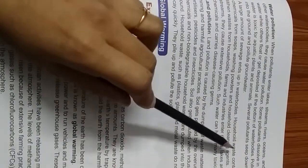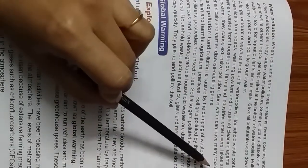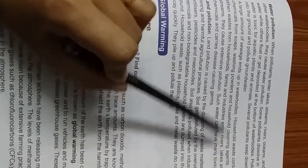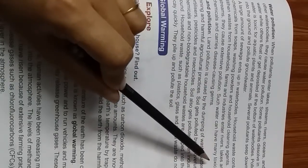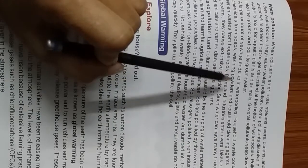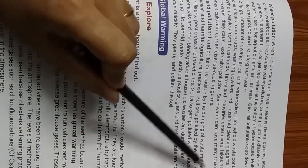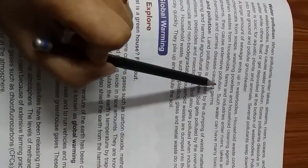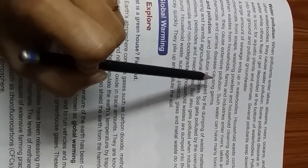A large amount of sewage ends up in water bodies. Household waste contains chemicals from soaps, washing powders, and household cleaning agents. When waste from households, farms, and industries enters rivers, lakes, and streams, they cause extensive pollution.